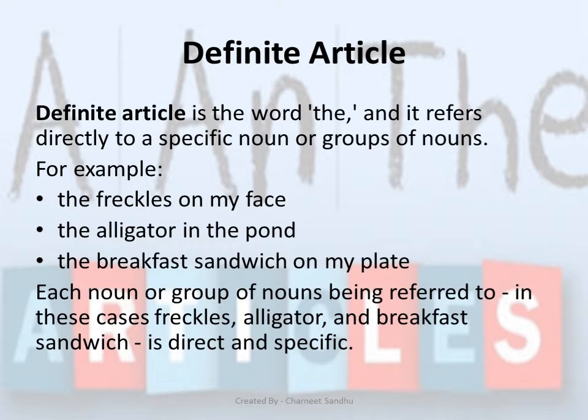The definite article can be used with singular, plural or uncountable nouns. For example: the freckles on my face, the alligator in the pond, the breakfast sandwich on my plate. In these examples, each noun or group of nouns being referred to — like freckles, alligator and breakfast sandwich — is direct and specific.